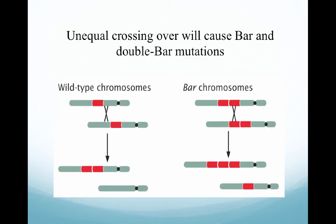In Drosophila, an unequal crossing over occurs as chromosomes pair in prophase I. Wild-type chromosomes go through the duplication process and splice out genes that could be beneficial, while the bar chromosomes don't have the ability for splicing. That's why you can get an individual chromosome with three different bar bodies, resulting in very little retinal material.